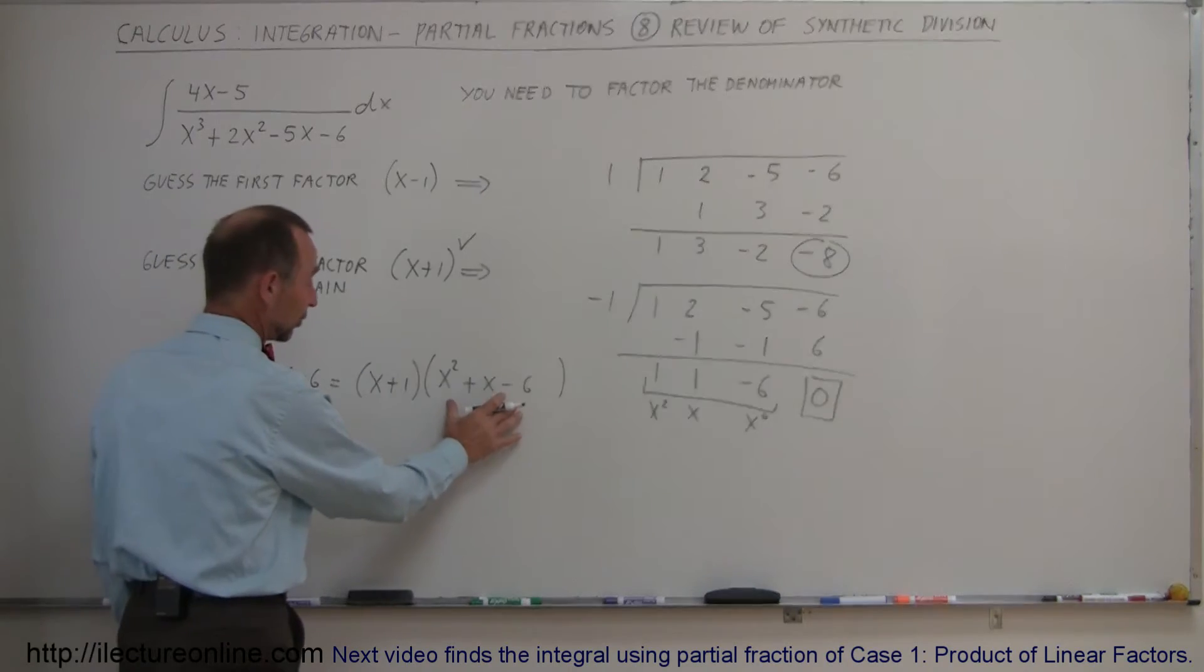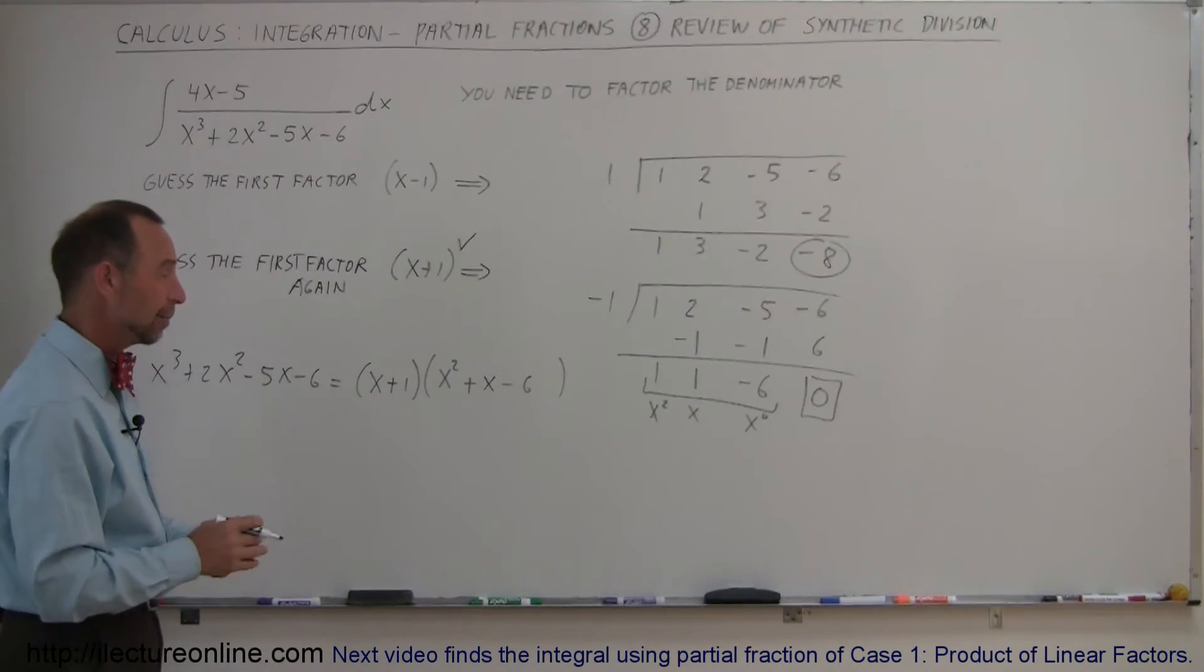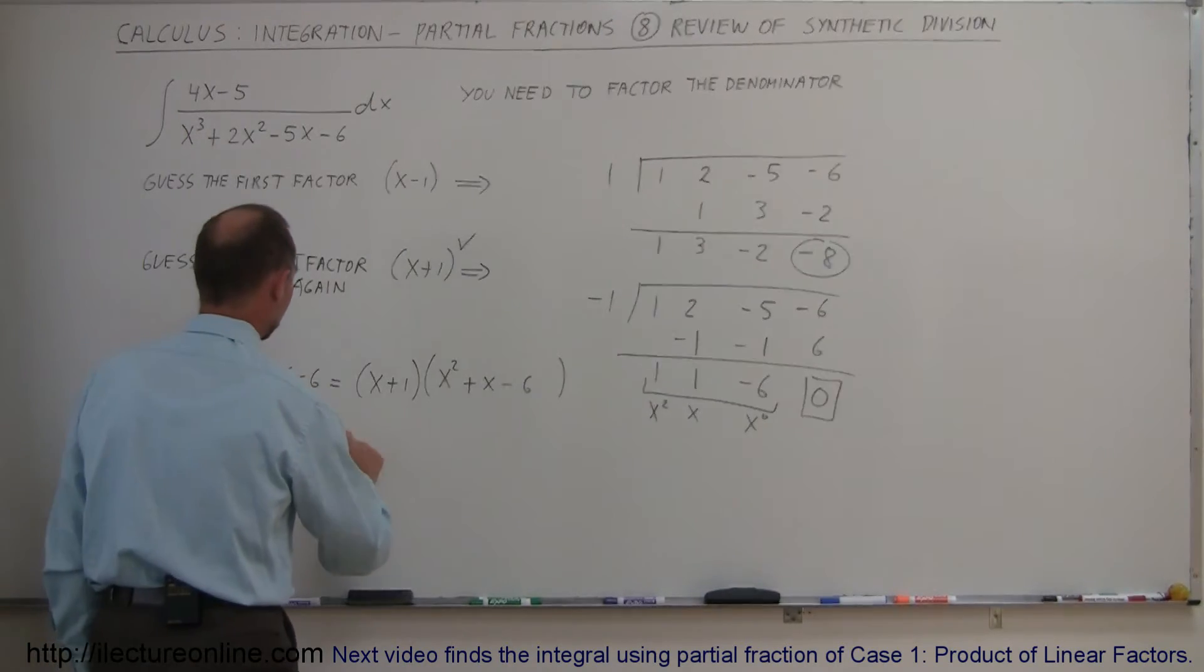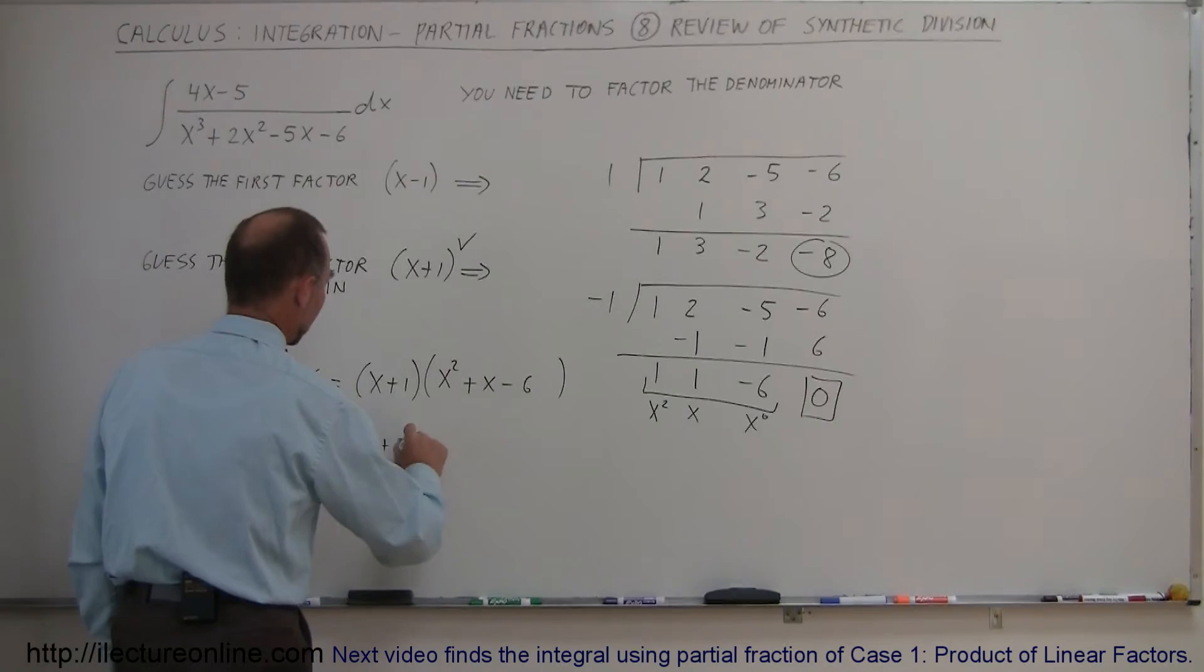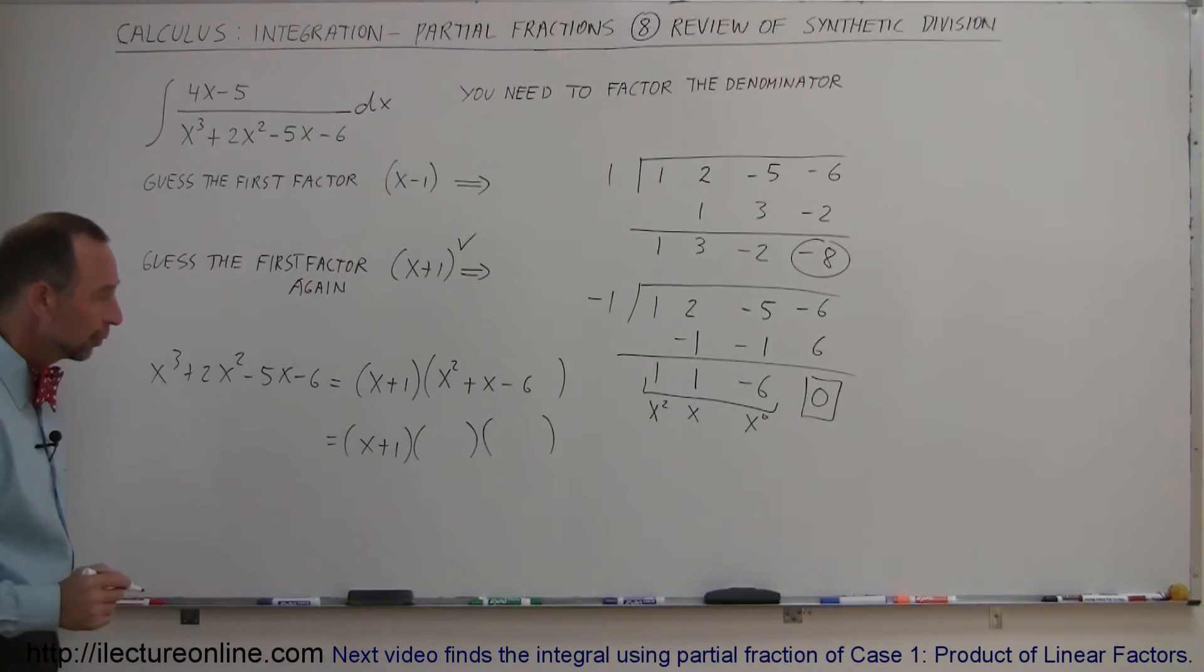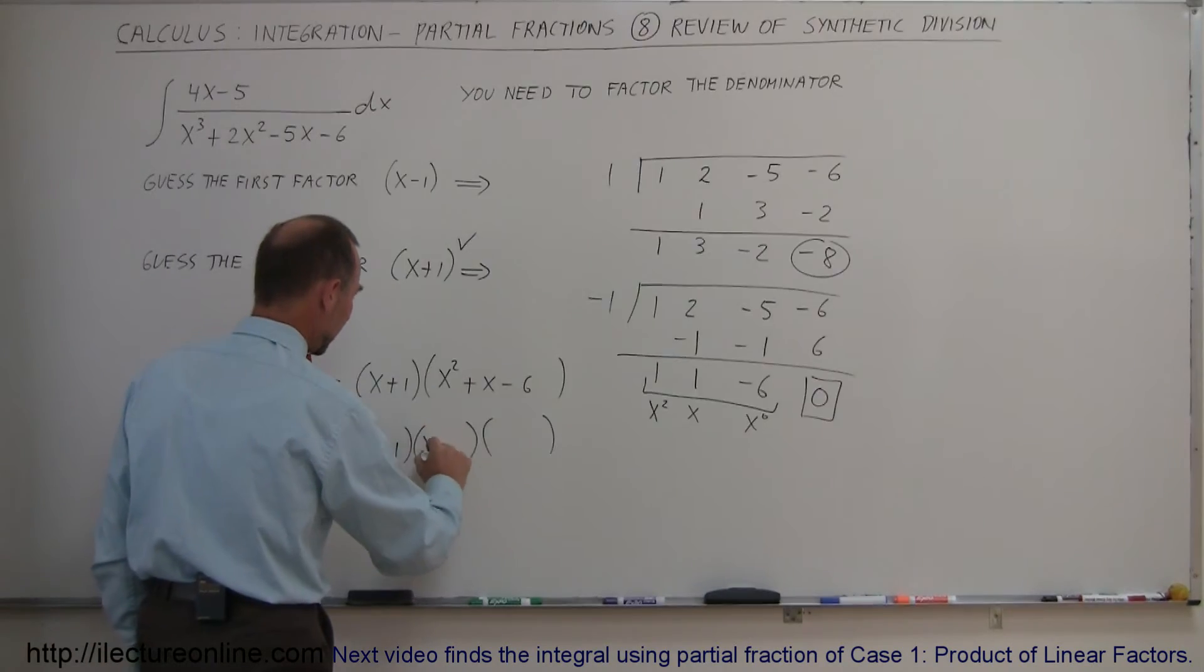Now, can we factor this? Typically now we're down to a second order expression, we can probably factor by using our typical factoring techniques. This is equal to x plus 1, and if this is factorable, we'll get two factors. For the x squared here, we'll put an x and an x, and now for the numbers over here.